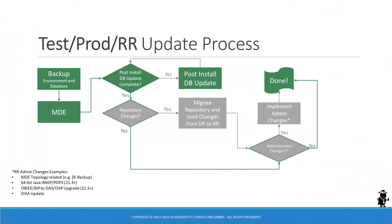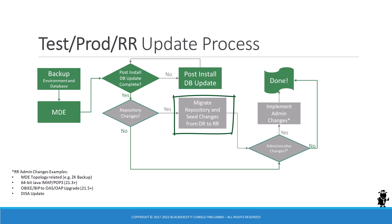The same is true for test or production, also known as RR environments, where the update process is a little shorter. The mandatory steps are the same: backup your environment, run MDE, run post-install database update. If there's nothing else to do, you're done. You have to repeat the update process for every Siebel instance. If the DR update included repository changes, you have to use the migration application to deploy the new and updated artifacts from the development environment to the runtime environment. You might also have some administrative changes on your checklist that you need to execute before declaring the update complete.